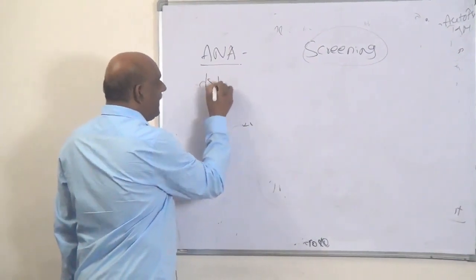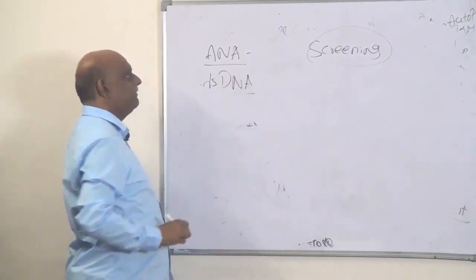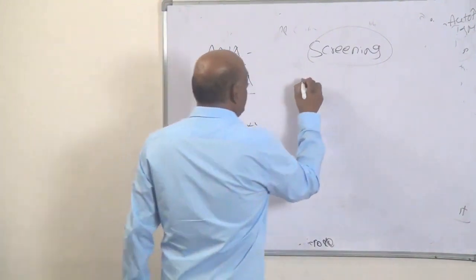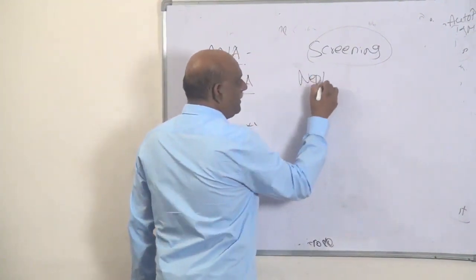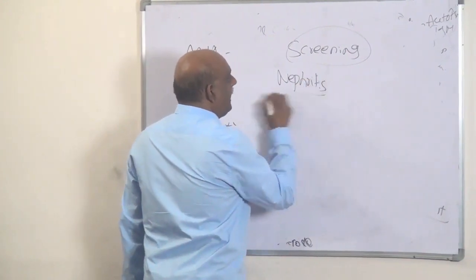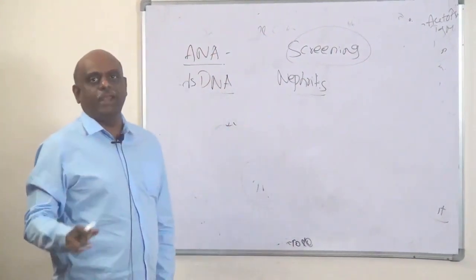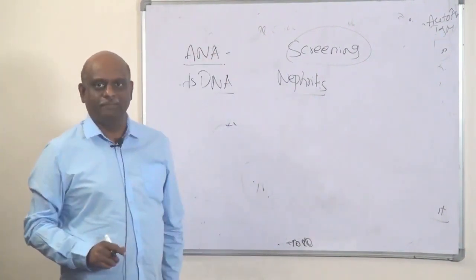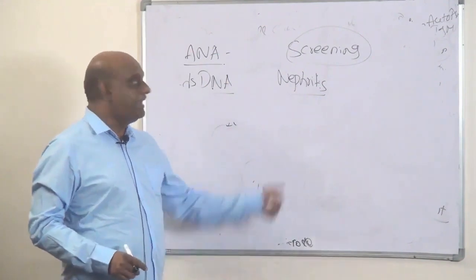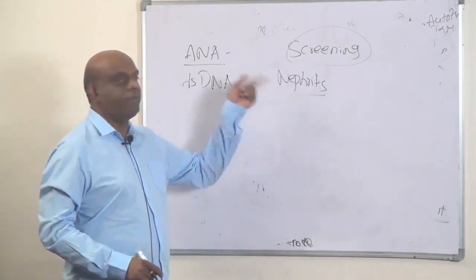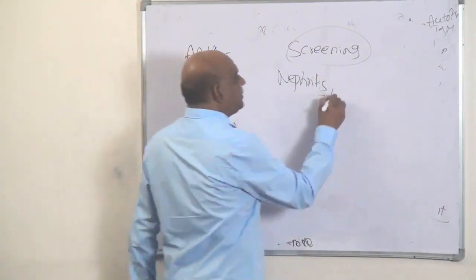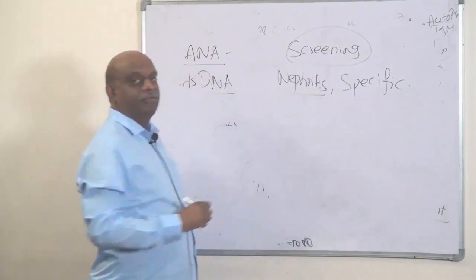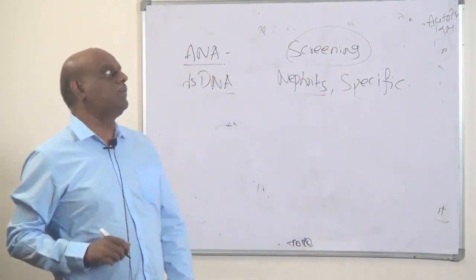Now, what is the story of ds-DNA? It is typically used to monitor nephritis. If a patient has nephritis — hematuria, high blood pressure — and you suspect SLE, if ds-DNA is positive, that is an important sign that this nephritis is SLE nephritis. It is also a specific test for SLE.